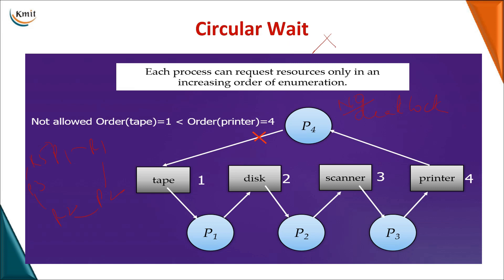To eliminate circular wait, we assign a priority to each resource — for example, tape=1, disc=2, scanner=3, printer=4, where 1 indicates higher priority and 4 indicates lower priority. A process holding a higher-priority resource cannot request a lower-priority resource. So if a process already holds a printer (priority 4) and wants tape (priority 1), it will not be allotted. A process can only request resources with a priority number greater than what it currently holds, maintaining a strict ordering.